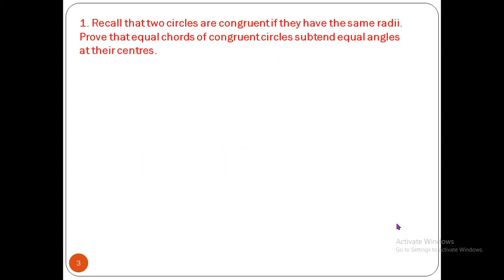Exercise 10.2, Question 1: Recall that two circles are congruent if they have the same radii. Prove that equal chords of congruent circles subtend equal angles at their centers. Here, instead of one circle, two congruent circles are given. Two circles are congruent when their radii are the same.